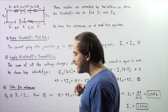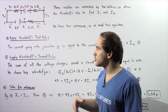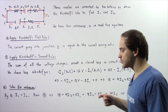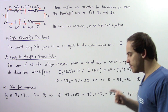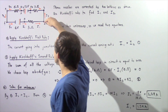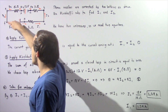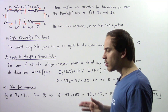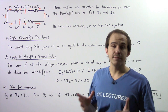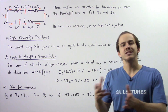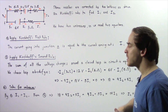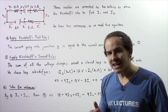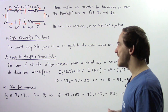We define I1 to be the positive electric current that flows through one section of our electric circuit, and I2 to be the positive electric current that flows through another section of our closed electric circuit. We have two unknowns, I1 and I2, so we need to create two equations. One equation will come from Kirchhoff's first rule and the second from Kirchhoff's second rule.